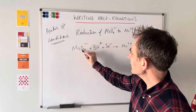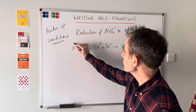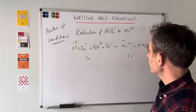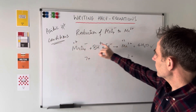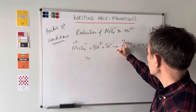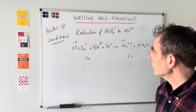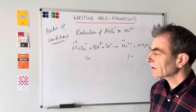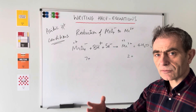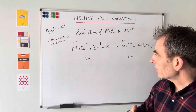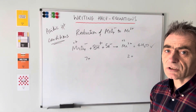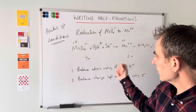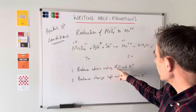Just before I write the steps down, let me link it in with oxidation number. The oxidation number of manganese in MnO4 minus is plus seven, and in the Mn2 plus ion it's plus two. So there's been a reduction - oxidation number's gone from plus seven to plus two - a change of five. And five electrons is what you need to bring about that change. That's the link with oxidation numbers.